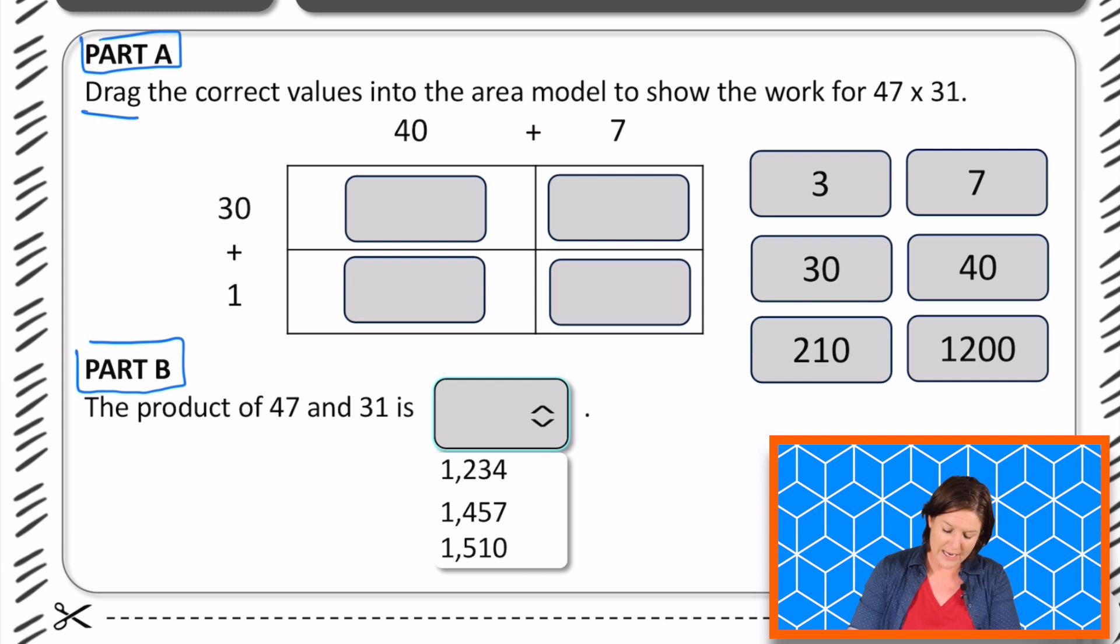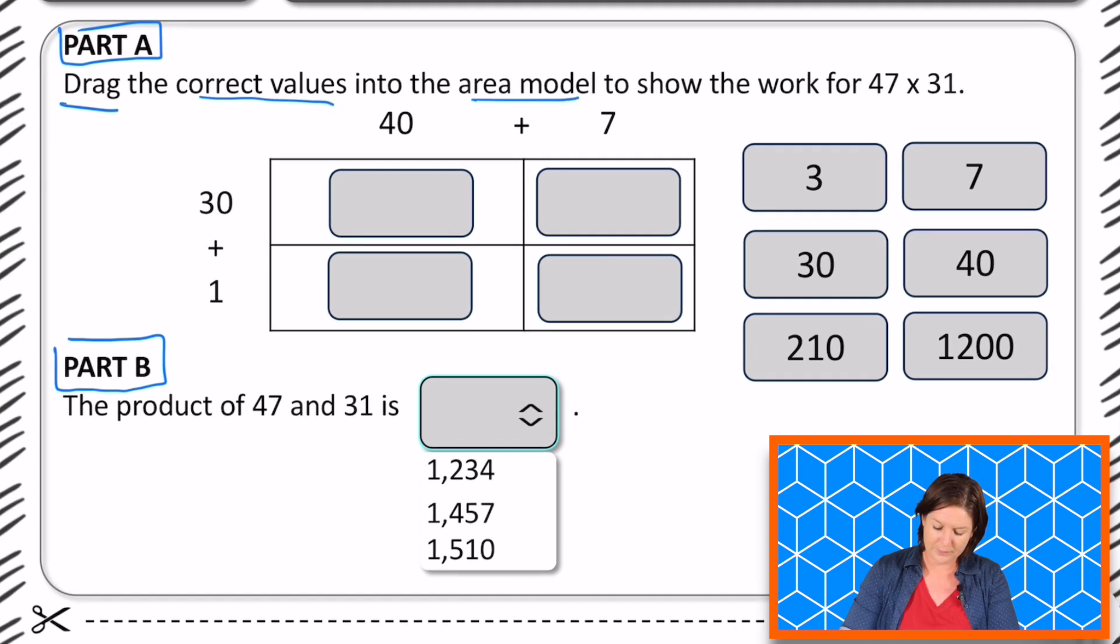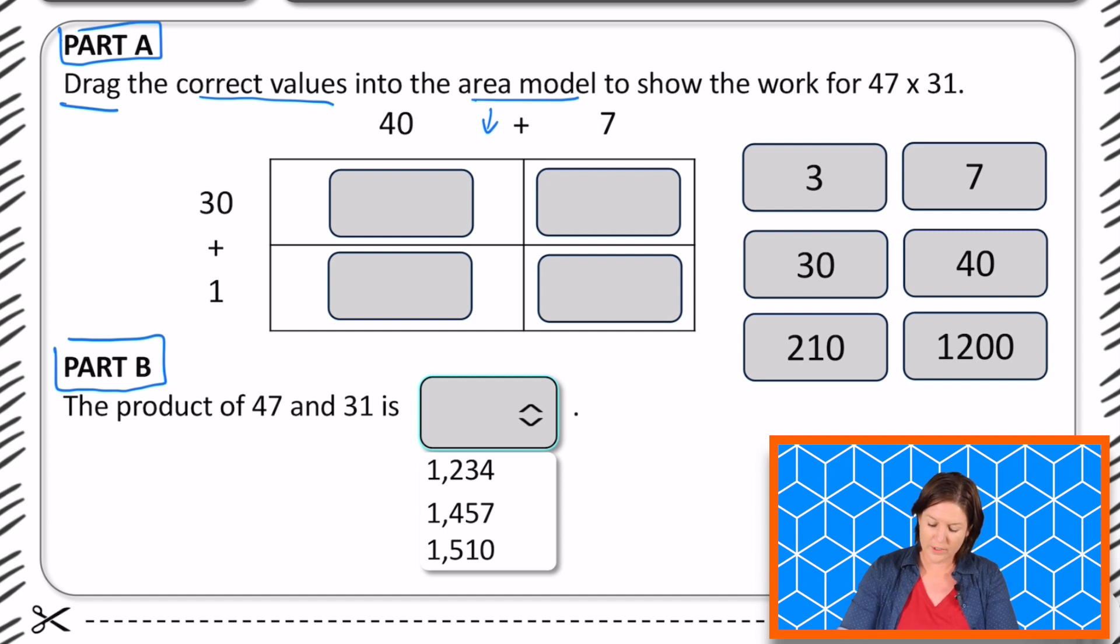So it says, part A says to drag the correct values into the area model, which is down here, to show the work for 47 times 31. All right, so dragging. Now, as you can see, I am marking up this printable copy, just like you might be doing too. But for most of us, when we take the fast math assessment, it's going to be on the computer and you will have the ability to click something and drag it where it needs to go. So we're going to practice that today the best that we can, just using a lot of our imagination to imagine that it's being dragged or moved over. So we've got the area model down here. We've got 47 has been broken into 40 plus 7 and 31 has been broken into 30 plus 1. Awesome.